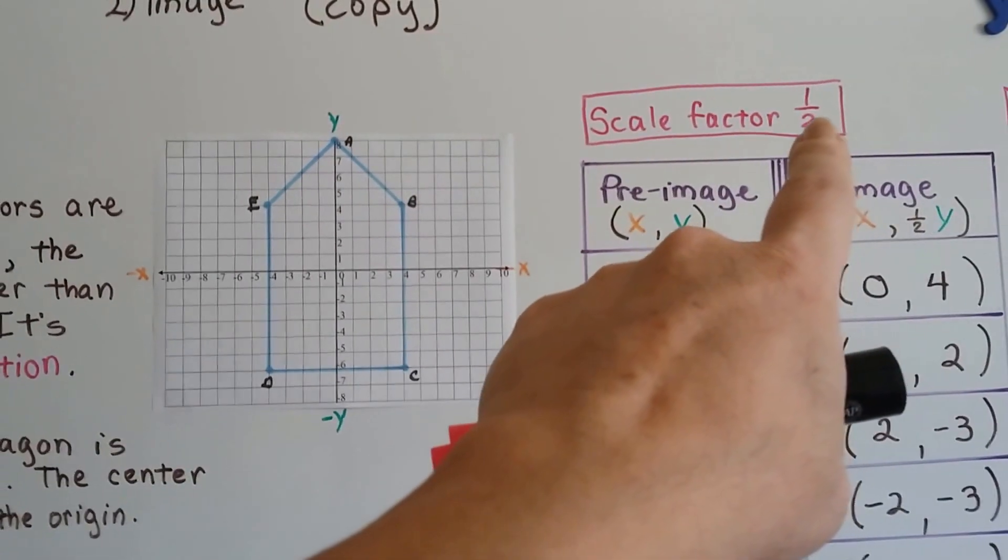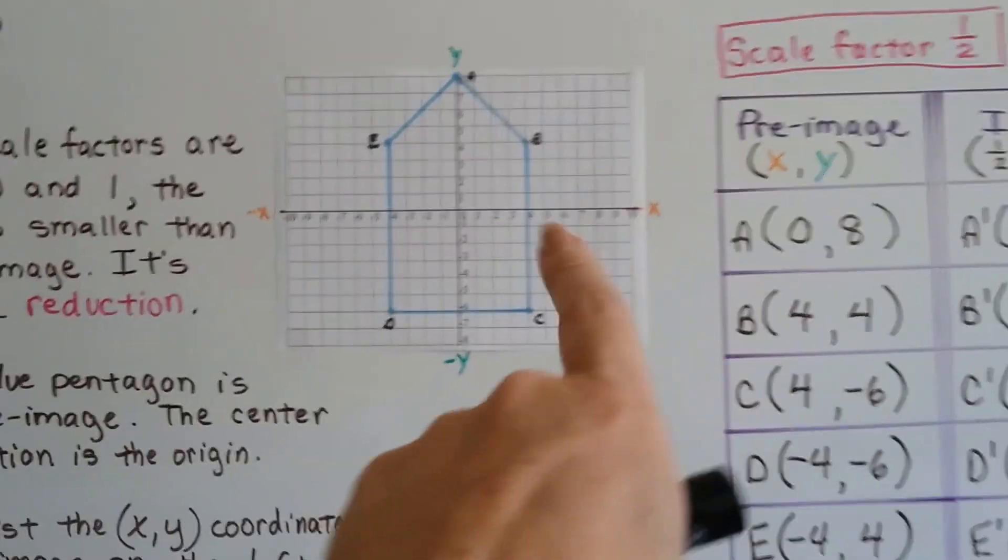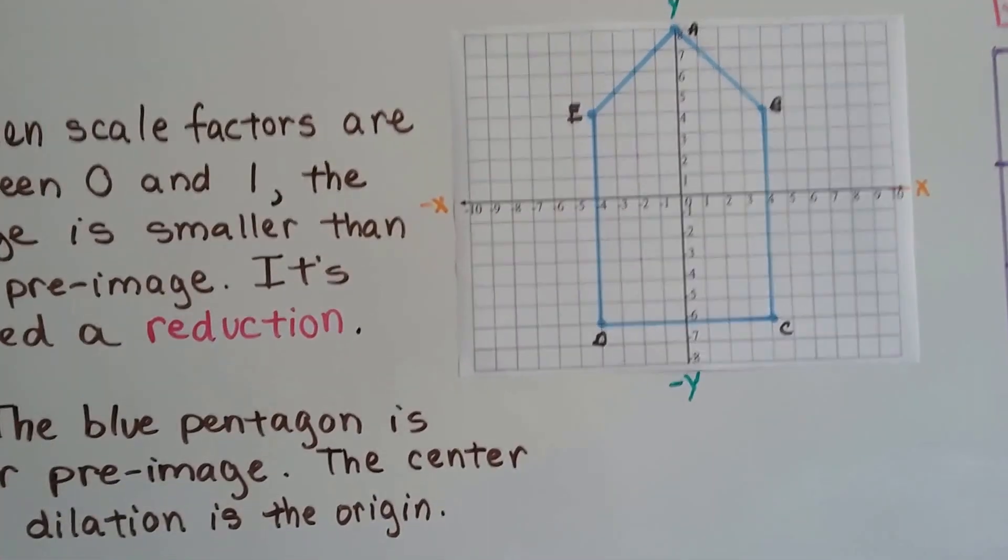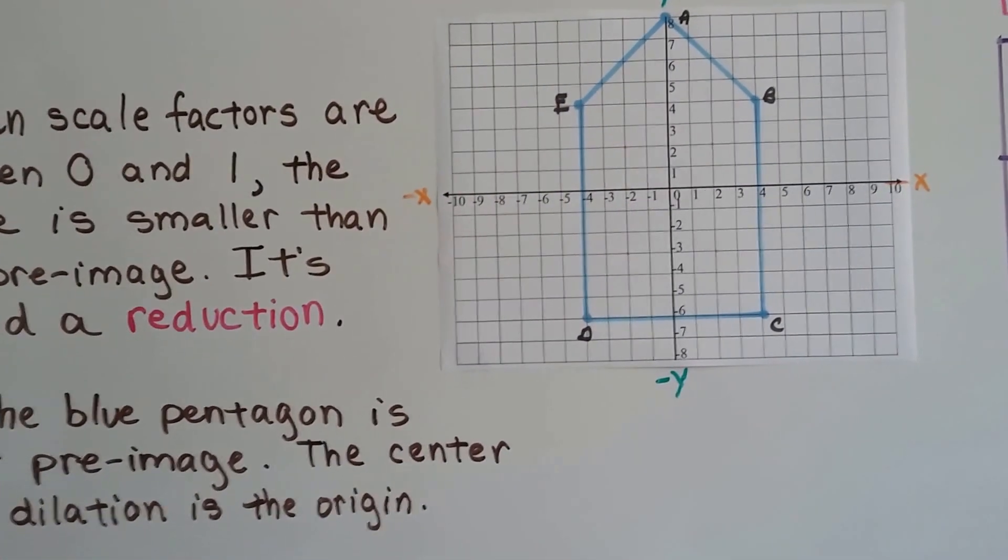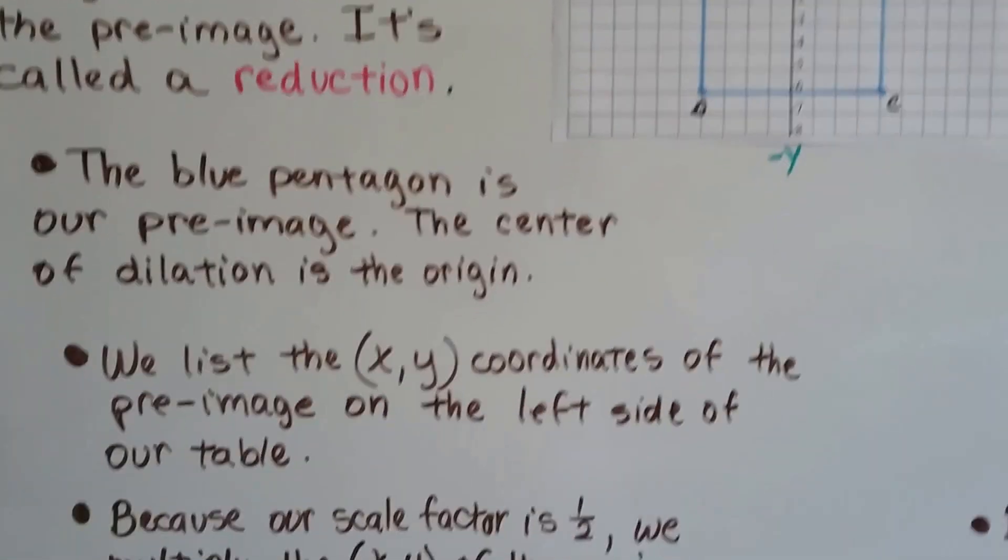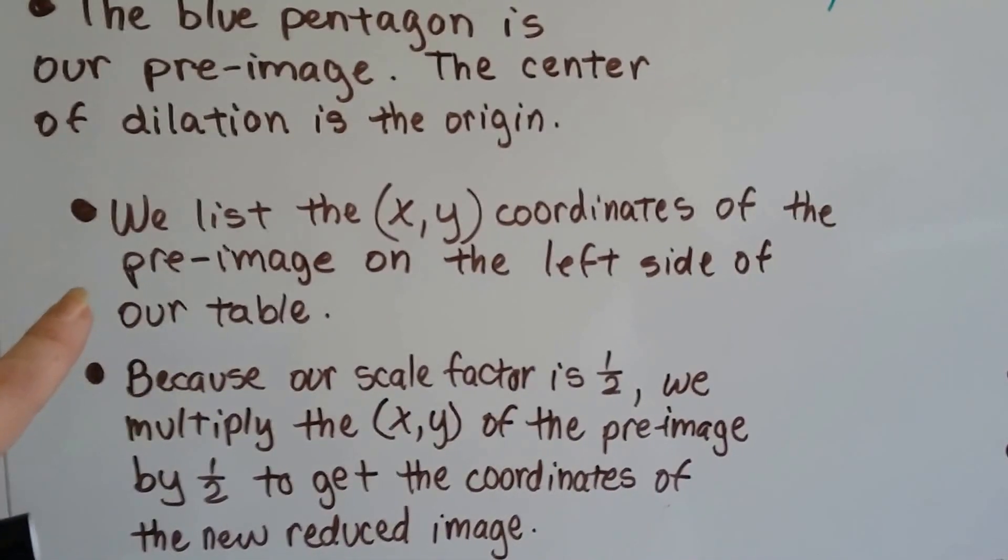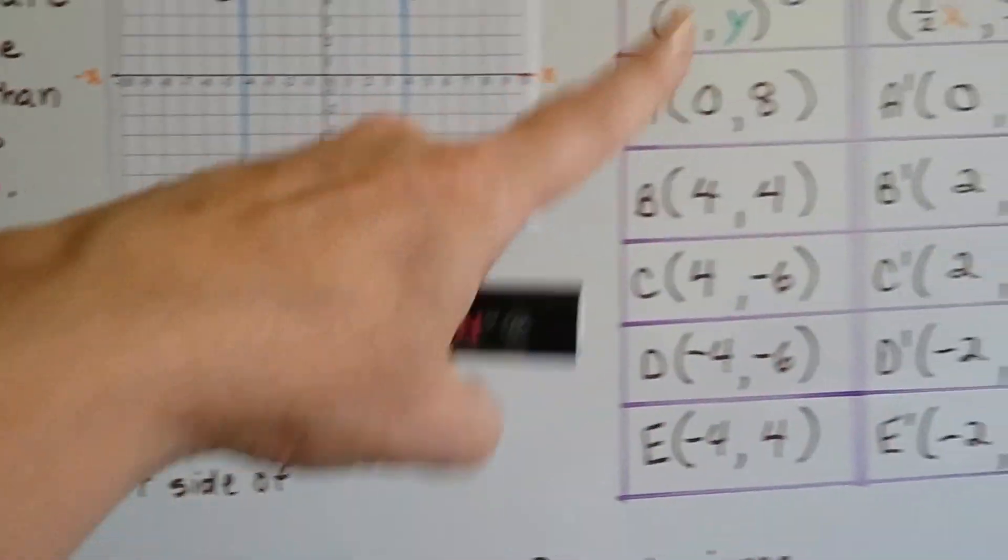So our scale factor in this one is going to be half. We're going to have to multiply the coordinates of this pentagon a, b, c, d, e by a half. We list the x, y coordinates of the pre-image on the left side of our table, right here.